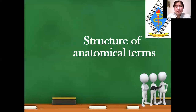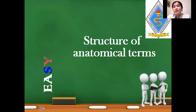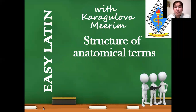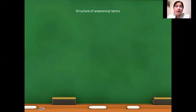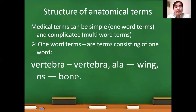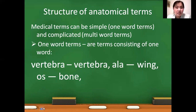So let's start our Latin lesson. Today we are discussing the topic: structure of anatomical terms. Medical terms can be of simple and complicated structure. One-word terms — as the name says, these terms consist of one word, like vertebra, ala, os — just one word naming an anatomical structure.